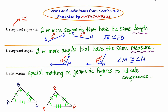The final definition is for tick marks: special markings on geometric figures to indicate congruence. You'll notice there are two triangles below with these markings — little slashes and little arcs. Those indicate congruence if they look exactly the same. For example, angle A has an arc and angle D has that same arc, so my conclusion is that they're congruent — angle A is congruent to angle D.